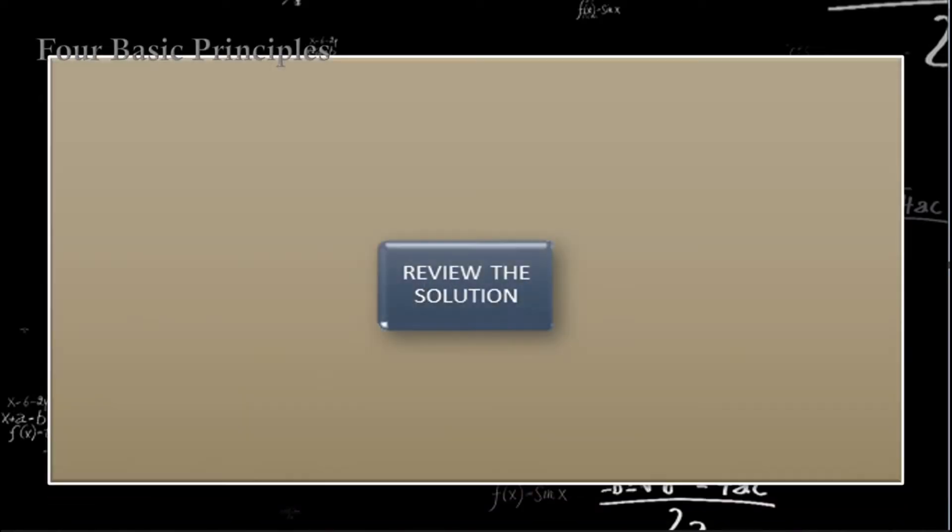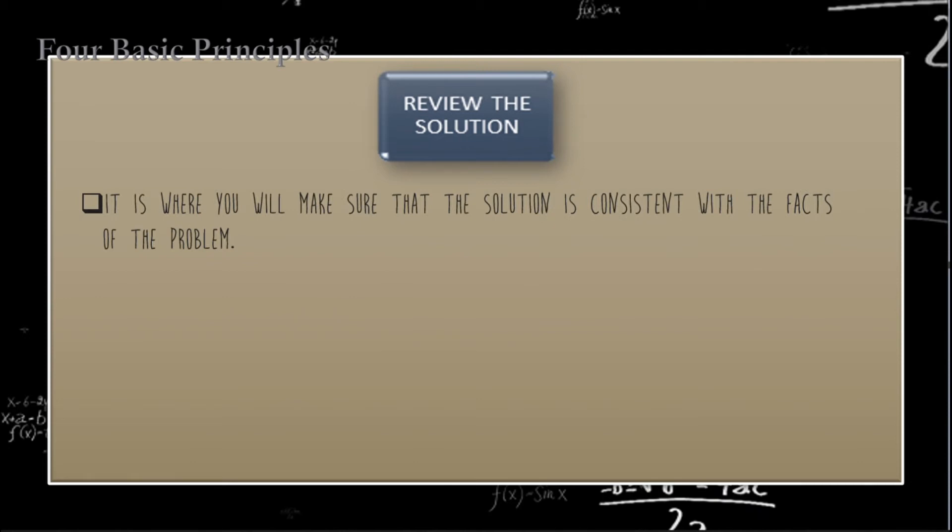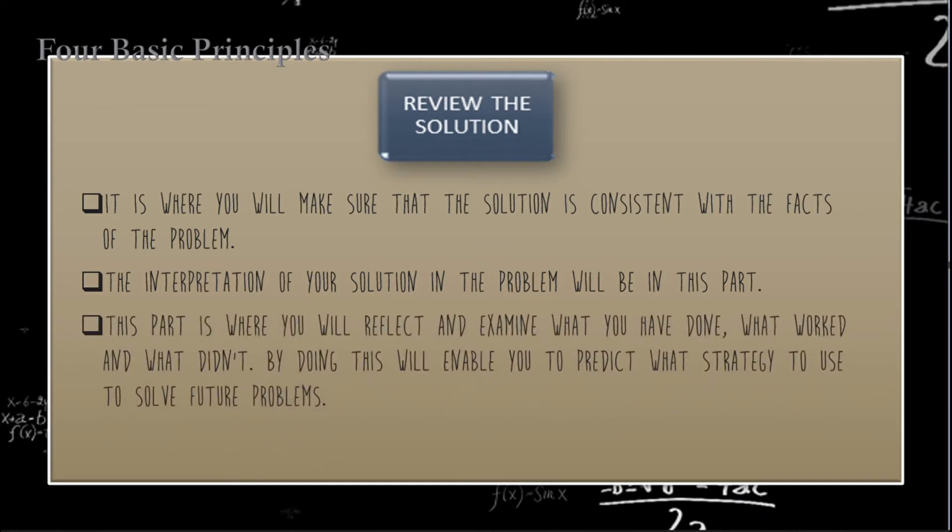The fourth and last principle is review the solution. It is where you will make sure that the solution is consistent with the facts of the problem. The interpretation of your solution in the problem will be in this part. This part is where you will reflect and examine what you have done, what worked, and what didn't. By doing this will enable you to predict what strategy to use and solve future problems. And by reviewing the solution, sometimes you may notice errors that you didn't notice.